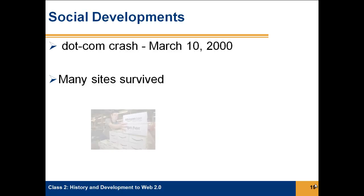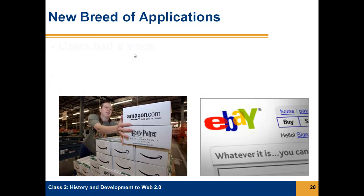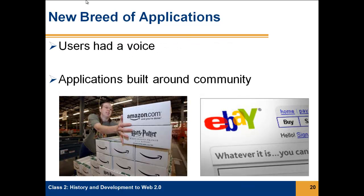The dot-com crash, which is supposed to have happened on March 10, 2000, played a big role in the development of Web 2.0. We looked at the sites that survived — Amazon.com and eBay — and examined what made these sites survive while others went out of business. Looking back, we see that this crash indicated a transition point from the Web 1.0 type of sites to the new Web 2.0 sites. One of the most significant things we see in these sites that survived is that users had a voice, and the applications were built around a community — two very predominant characteristics of the beginning of Web 2.0.